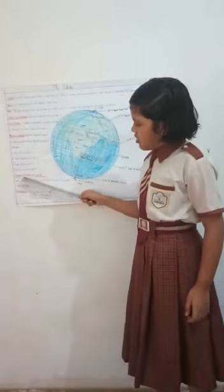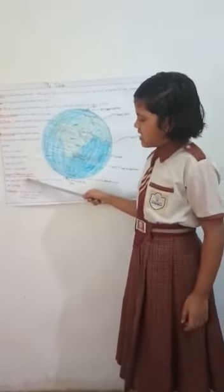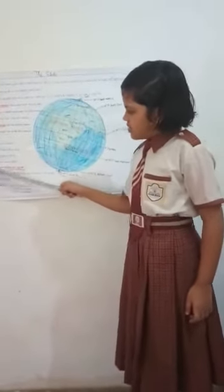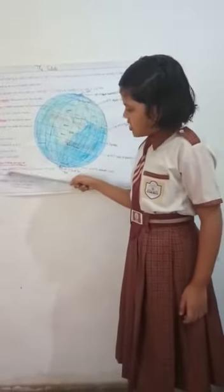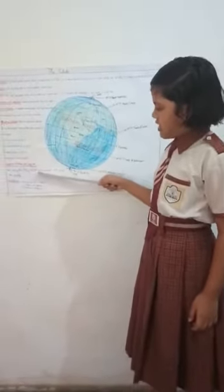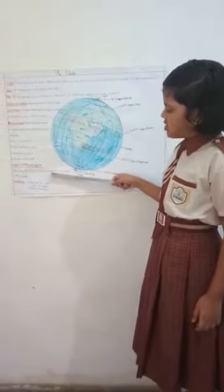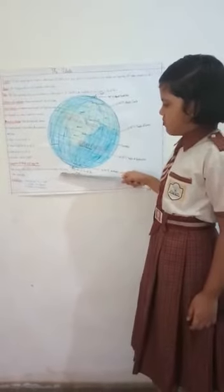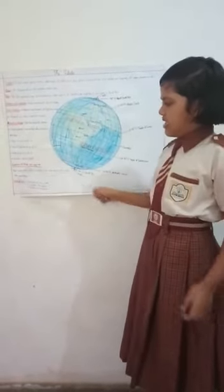Importance of latitudes and longitudes: These imaginary lines help us to locate a place on the Earth both quickly and accurately.